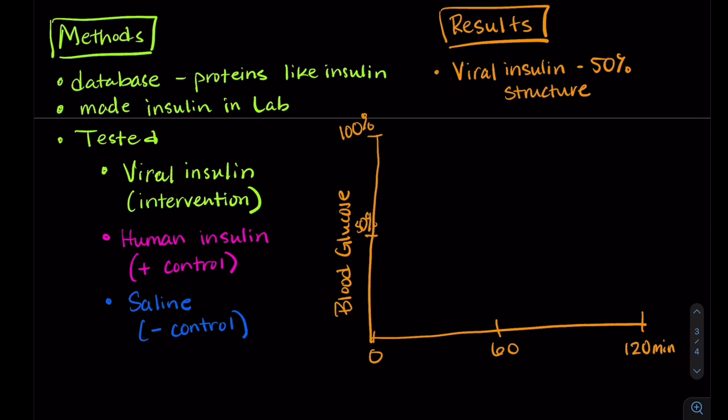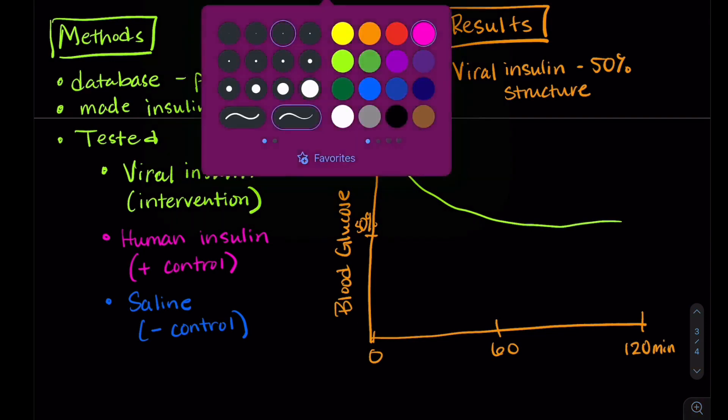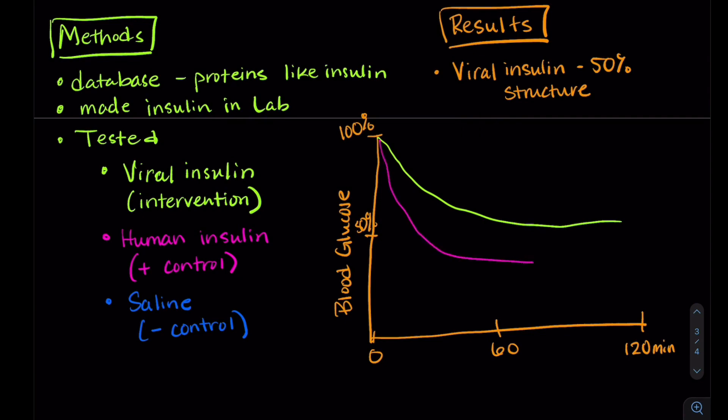So what they found here with the viral insulin is, in fact, those blood glucose levels did go down. So that was great. Their human insulin also went down and actually went down more. So it worked better than the viral insulin. And then our saline stayed about at 100% and went down a little bit towards the end because our mouse is still having its normal metabolism going on. So basically what they concluded was their viral insulin works, but our human insulin works better.